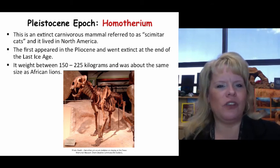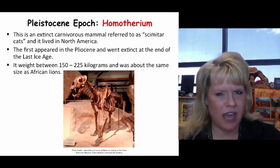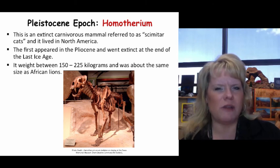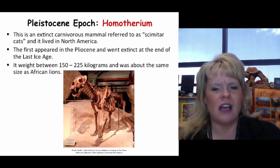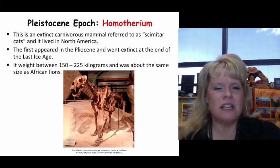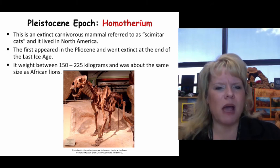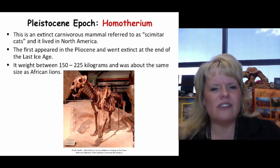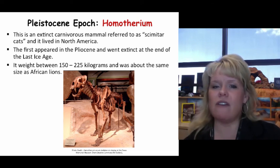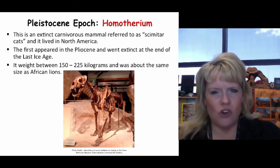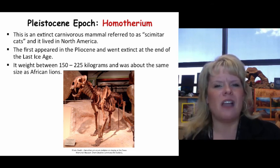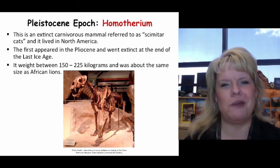Homotherium is the scimitar cat — a shorter-fanged version of Smilodon, the saber-toothed cat. It was built a little differently, with hind legs that gave it better running capability than Smilodon, though it could still ambush prey. It first appeared in the Pliocene but went extinct at the end of the last ice age. These cats got up to 225 kilograms, roughly the size of an African lion today — smart, agile, and deadly killers.